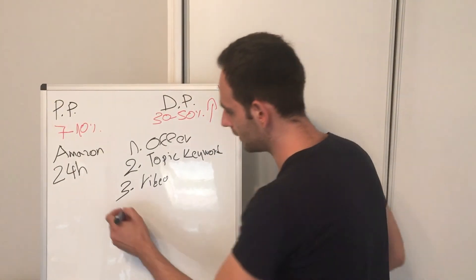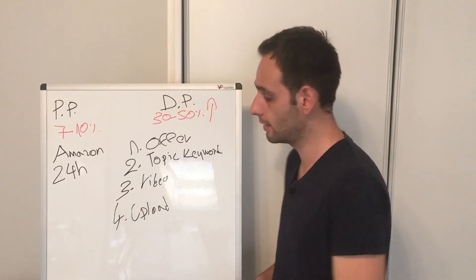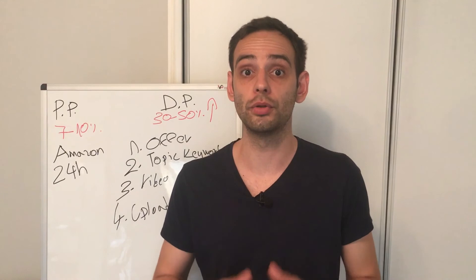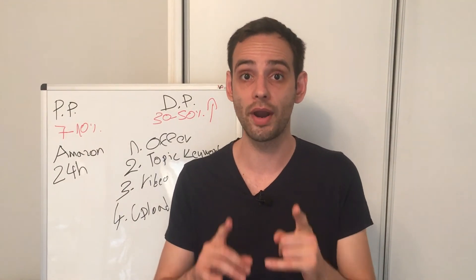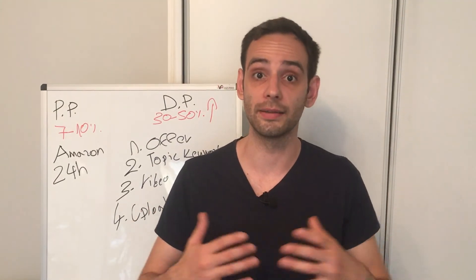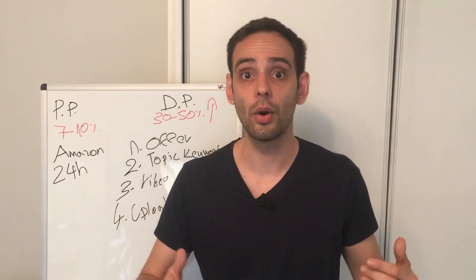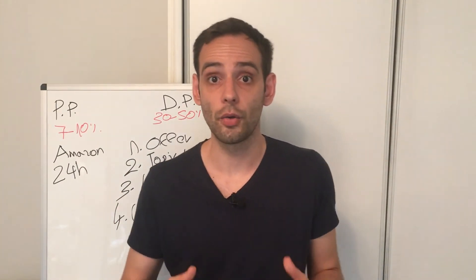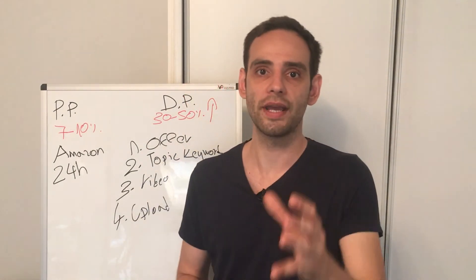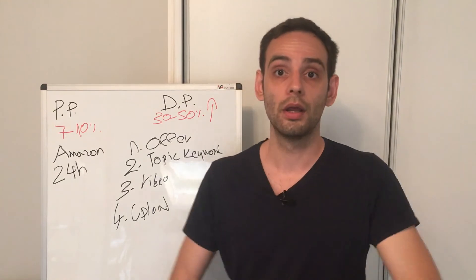Now you've got your video — the last step is to upload it to YouTube. In the description, you can put whatever you want, and that's where you place your affiliate link. At the end of the video, tell people: 'If you're interested in learning more, click the link in the description below.' Always have a call to action. That's exactly how you do affiliate marketing on YouTube.